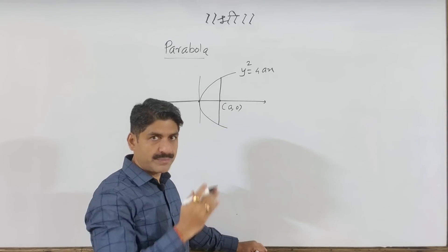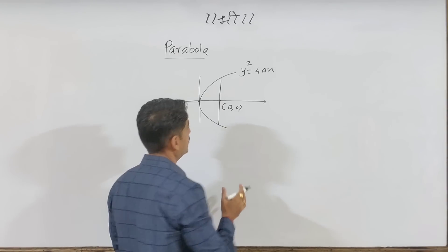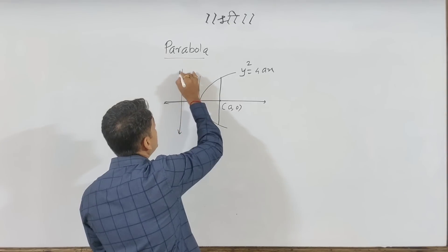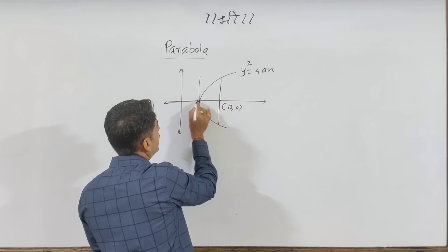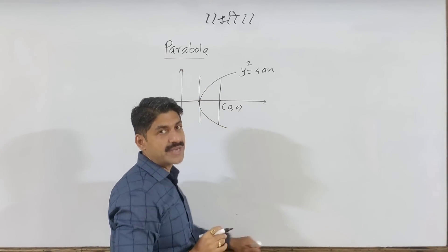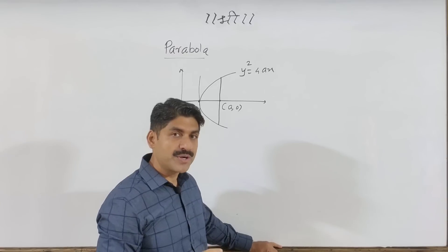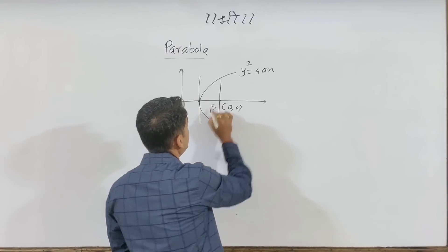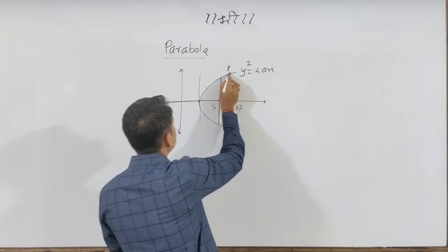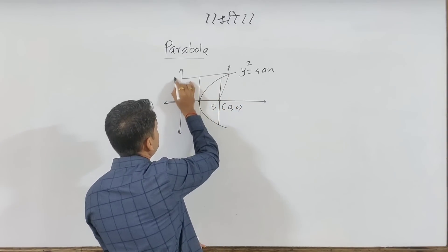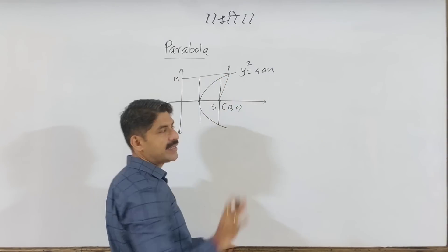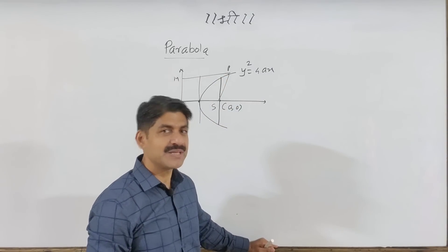The focal chord is perpendicular to the axis — that is the latus rectum. What is the directrix? And what is the focus-directrix property? The focus is S, the point is P. The distance from P to focus equals the distance from P to the directrix — these two distances are equal. The parabola is a perfect shape based on this property.